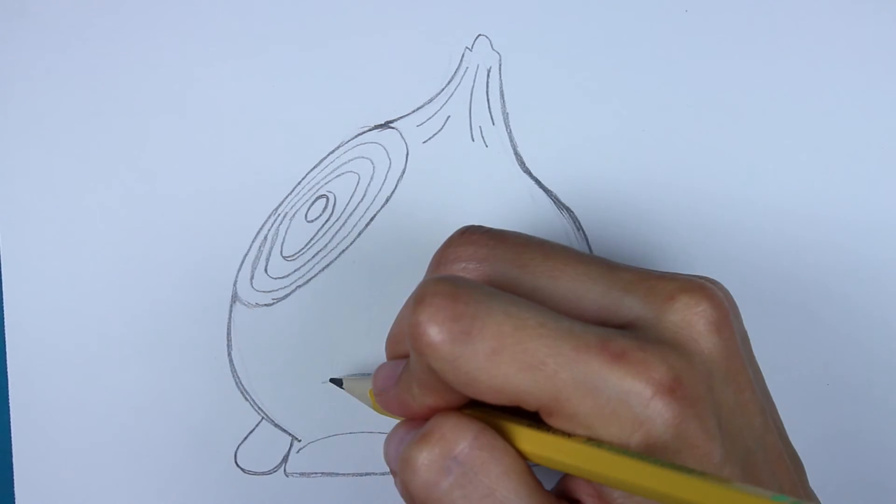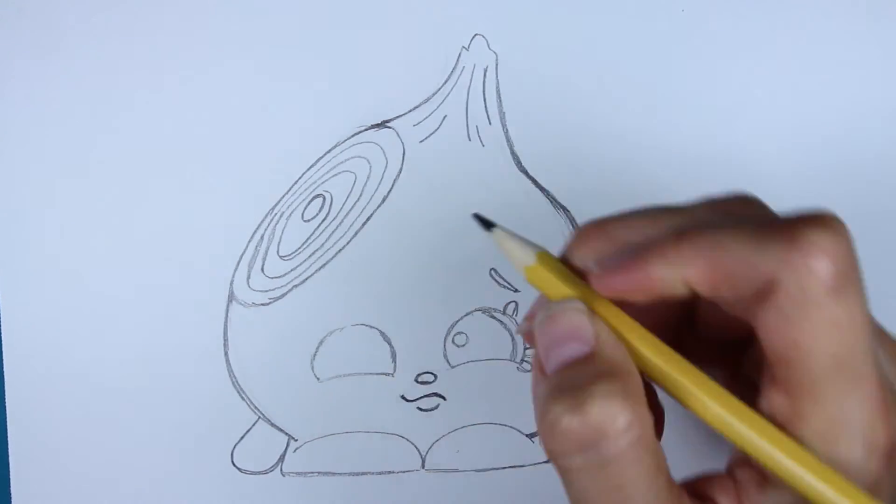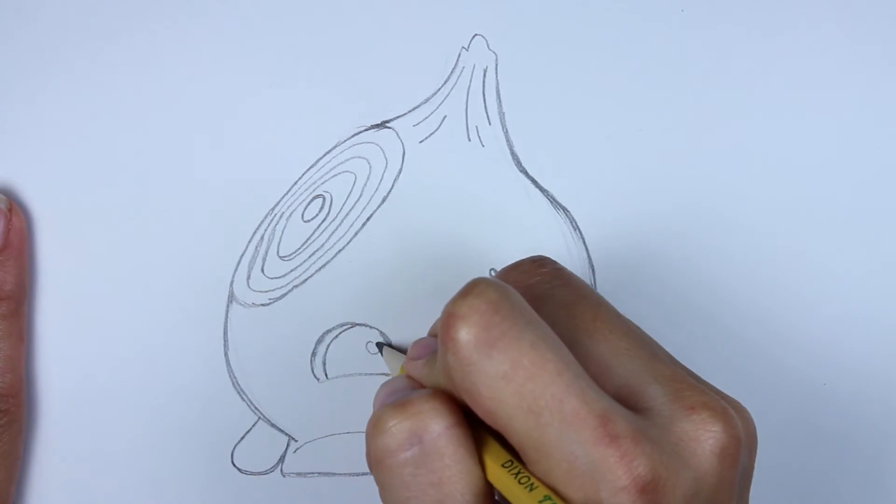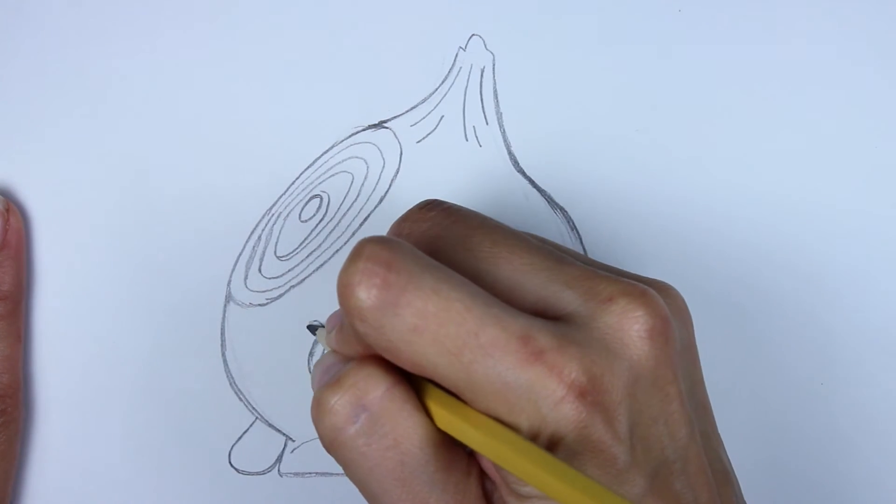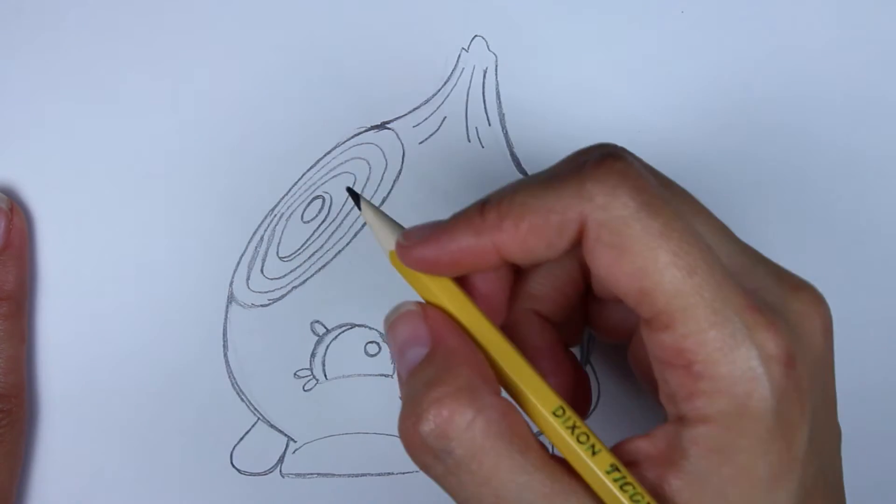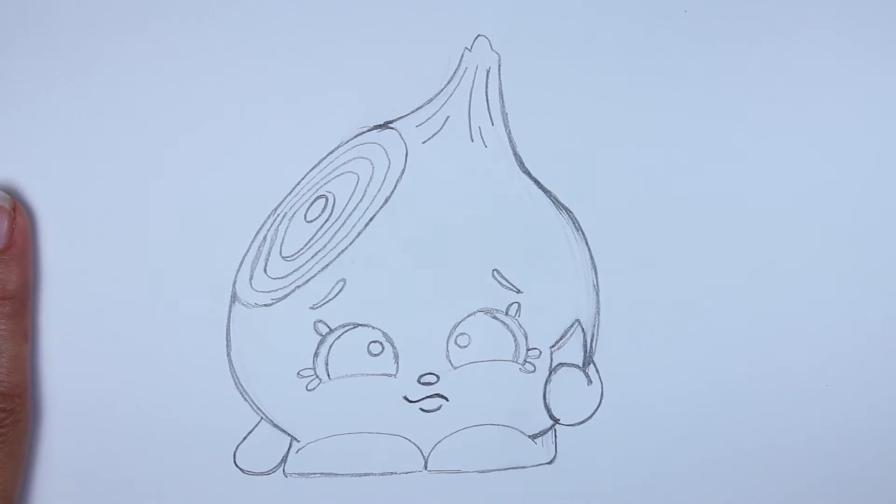And then once again, that semi circle from one side to the other. And then a curved line inside. And then the pupil. Followed by three eyelashes. Like that. And then the eyebrows. Which is another comma looking shape like that.